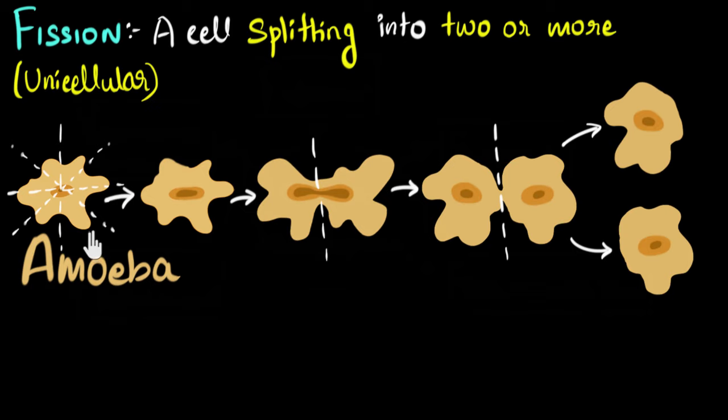So when it comes to amoeba and some other unicellular organisms, we will find that they can split or fission can happen along any particular axis. So one kind of fission is this irregular kind of fission that can happen along any axis.